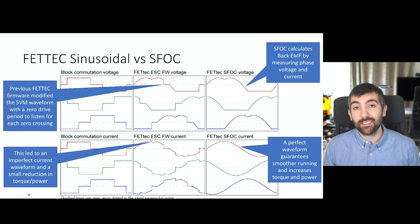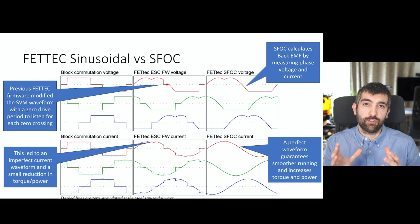This final slide highlights the big step forward that FETTECH are taking with this new SFOC ESC. Previous ESCs with sinusoidal drive, be they FETTECH, BL-Heli32 or AM32, have always had to modify this SVM driving voltage with a zero drive period to listen for the back EMF from the motor to determine the rotor position relative to the coil and make sure that the ESC is in sync with the rotation of the motor. This period of zero drive modifies the perfect sinusoidal current and it creates this slightly jagged waveform. You can see that it's a much closer approximation to a sinusoid than block commutation. So it's better than block commutation, but it's by no means a perfect sinusoid.